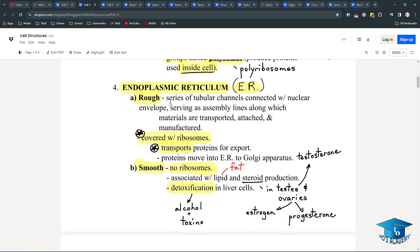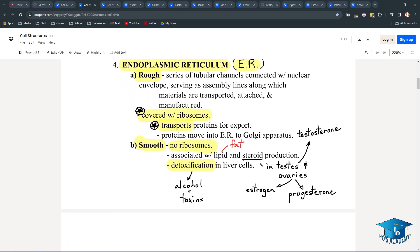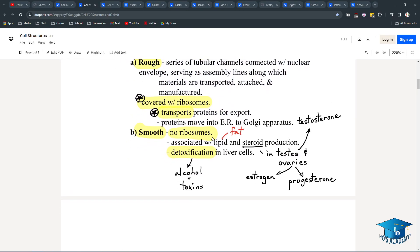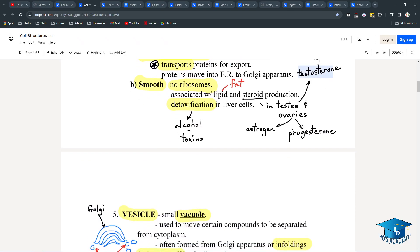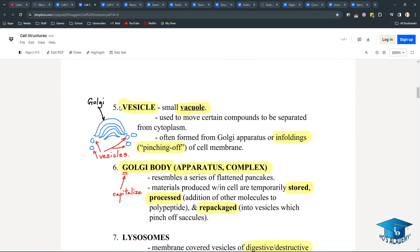The rough ER has tubular channels connected to the nuclear envelope. They're like an assembly line, like a little factory for proteins, and they get sent out. Smooth ER has no ribosomes and is associated with fat and steroid production and detoxification. So you'll see a lot of them in liver cells. Testosterone, progesterone, estrogen for steroid production. And alcohol and toxins are broken down into carbohydrates, which explains why you get so fat if you drink.